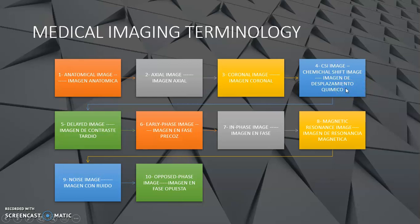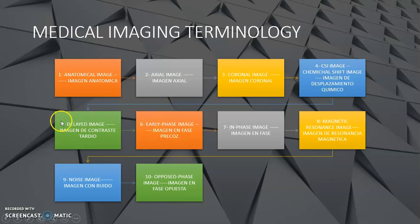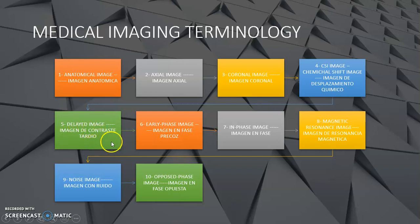It has two meanings, or two ways to say that in English. Hay dos formas de decir esta parte en inglés: CSI image, or chemical shift image — imagen de desplazamiento químico. Number five: delayed image — imagen de contraste tardío.